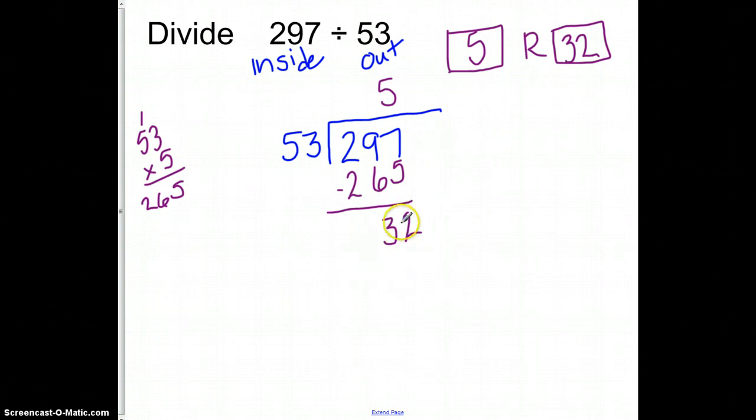Remember, our left over here has to be smaller than what we divided by. So 32 is smaller than 53, so that's good. That R stands for remainder. Now remember, this remainder has to be smaller than this. If, for some reason, when you do this, this number is not smaller than this 53, that means that it could have gone in at least one more time. So please be aware that when you do that, you actually pay attention to that piece.